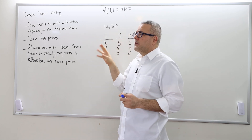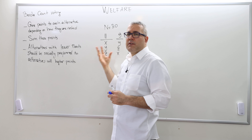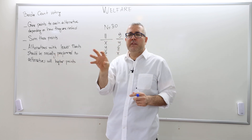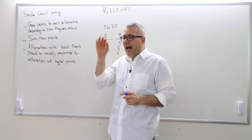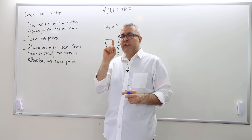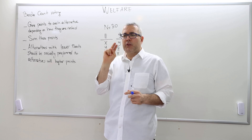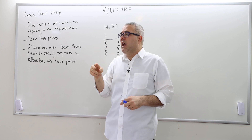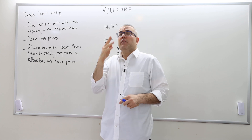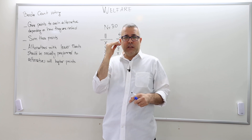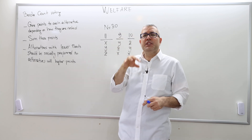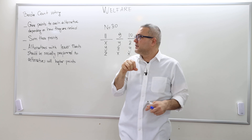The Borda count rule works as follows: given any preference profile, give points to each alternative depending on how those alternatives are ranked. Give one point to those alternatives ranked first, two points for those ranked second, three points for those ranked third, four points if ranked fourth, and so on.